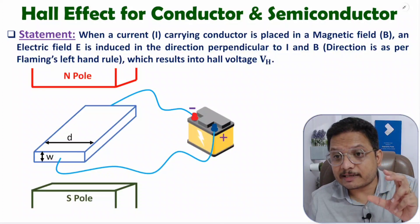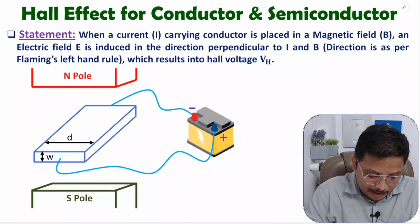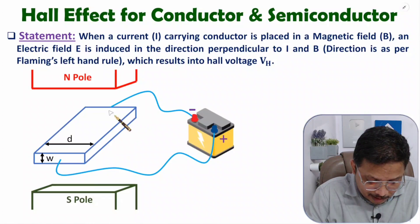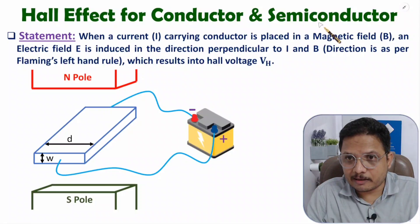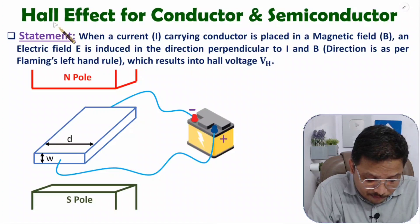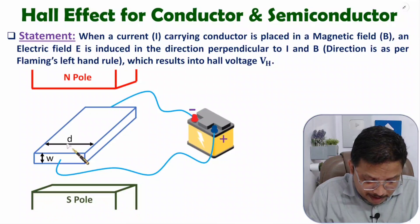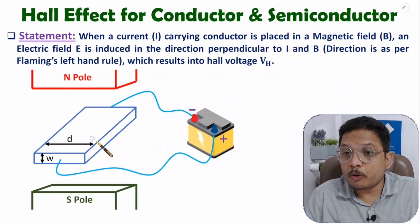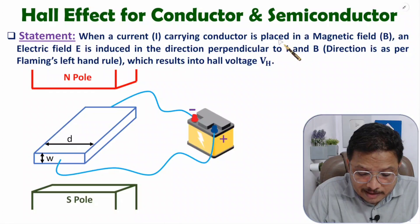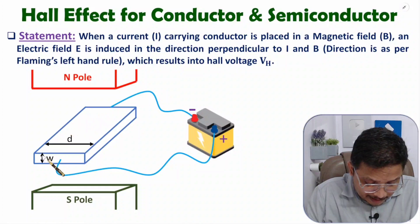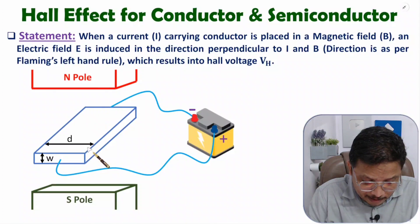Let's see how the Hall Effect generates Hall voltage in a conductor or semiconductor material. Here I'm keeping one material — this material could be conductor or semiconductor, as the Hall Effect is applicable to both. As per the Hall Effect, if you pass current through this material and apply a magnetic field, there will be generation of Hall voltage. When a current-carrying conductor is placed in a magnetic field — and here the conductor could be a semiconductor as well.